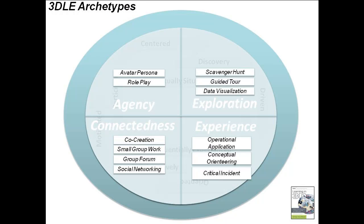Putting those things together gives us the 3D learning archetypes. Each of those archetypes feeds into what we call macro structures — the academic aspect of our model. These organize into agency, exploration, connectedness, and experience. By looking at these together, you can create an effective 3D learning solution that doesn't involve virtual PowerPoint. That's really one of the key things we want people to understand.